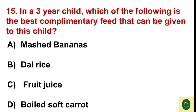In a 3-year-old child, which of the following is the best complementary feed that can be given? Option A: mashed bananas. Option B: dal rice. Option C: fruit juice. Option D: boiled soft carrot. The correct option is Option B — dal rice.